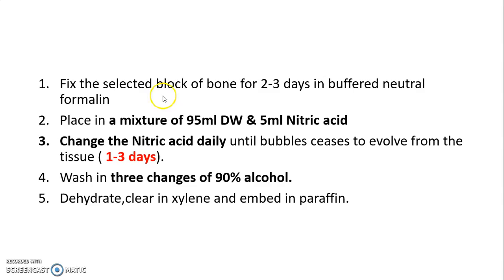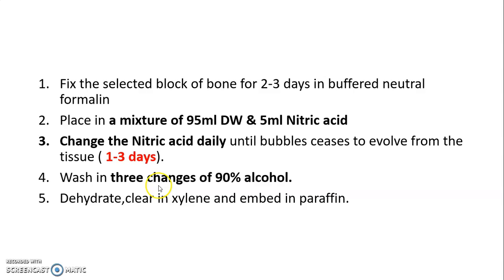For the nitric acid procedure: first, fix the selected block of bone for 2–3 days in buffered neutral formalin. Then place it in a mixture of 95 ml distilled water and 5 ml nitric acid. Change the nitric acid daily until bubbles cease to evolve from the tissue — this takes approximately 1–3 days. Then wash in 3 changes of 90% alcohol, followed by dehydration, clearing, and embedding in paraffin wax.